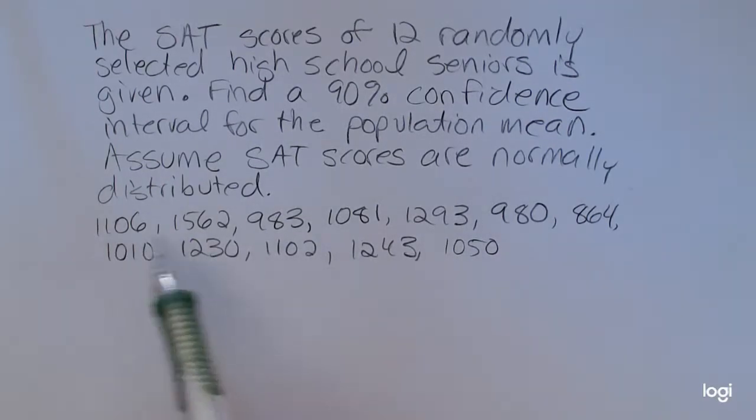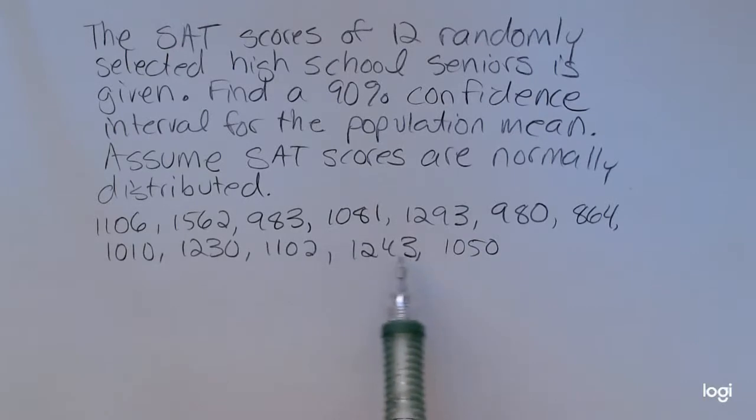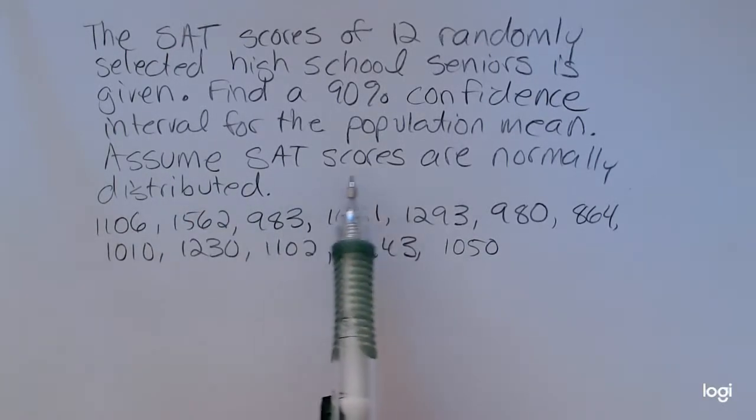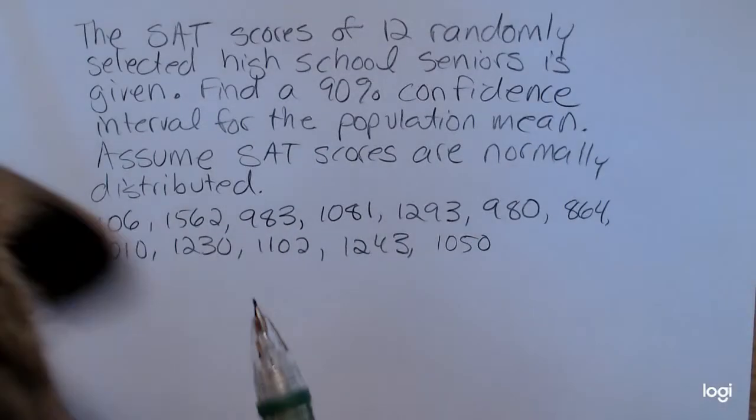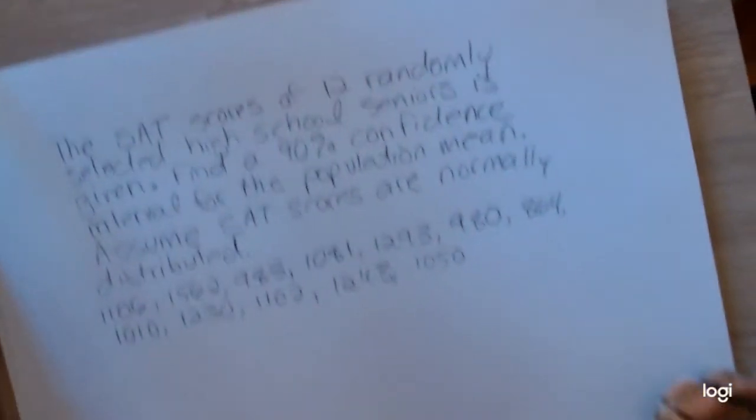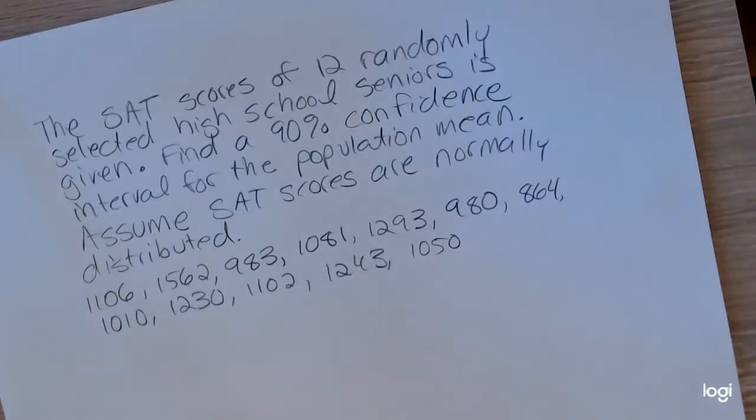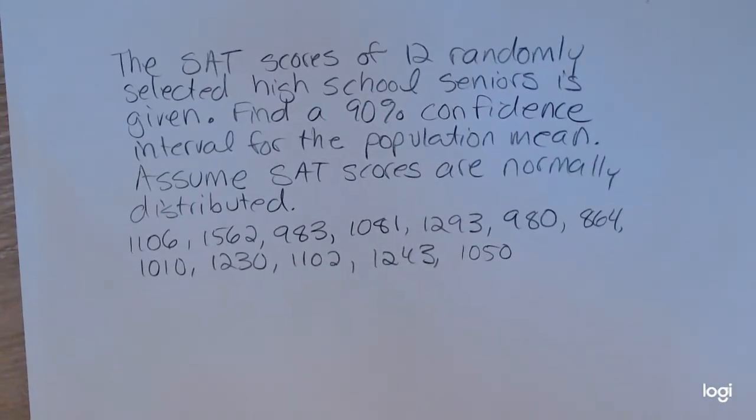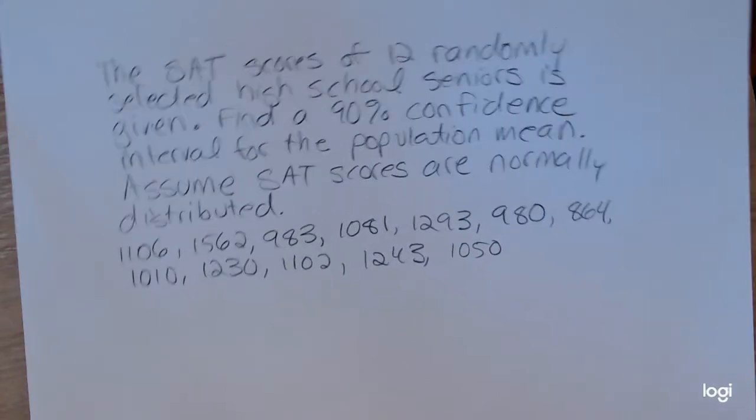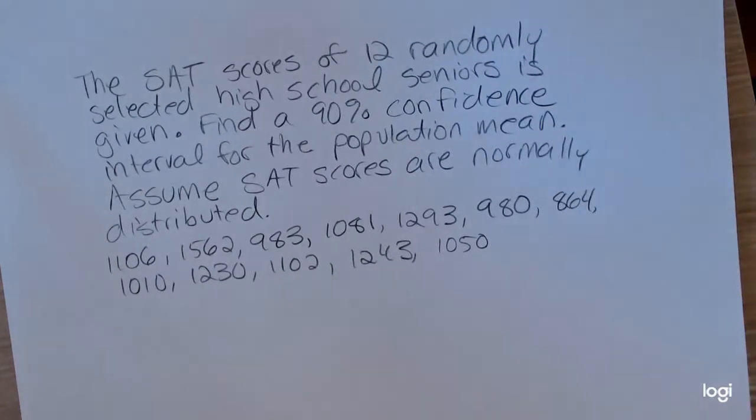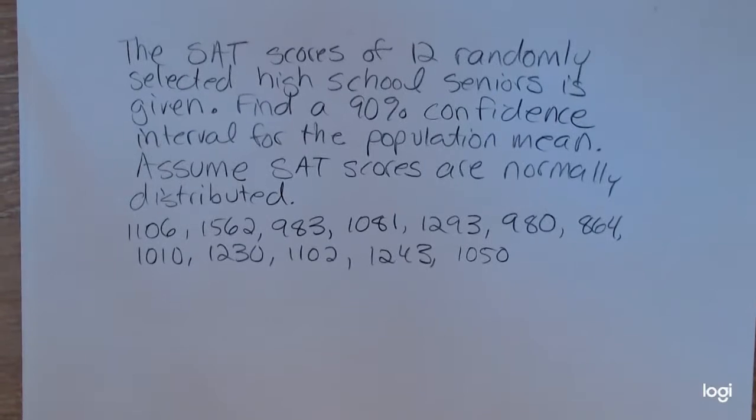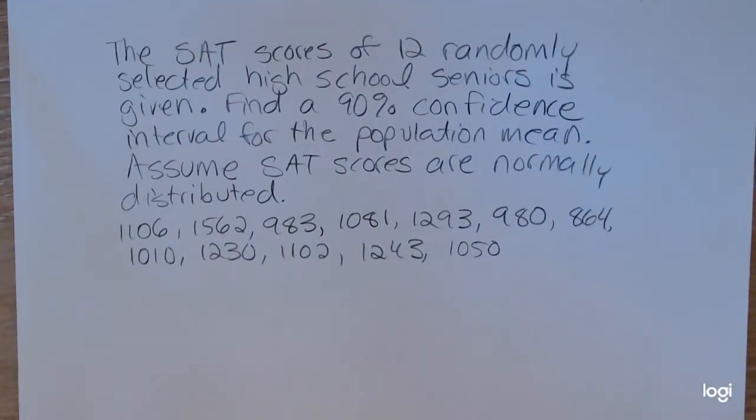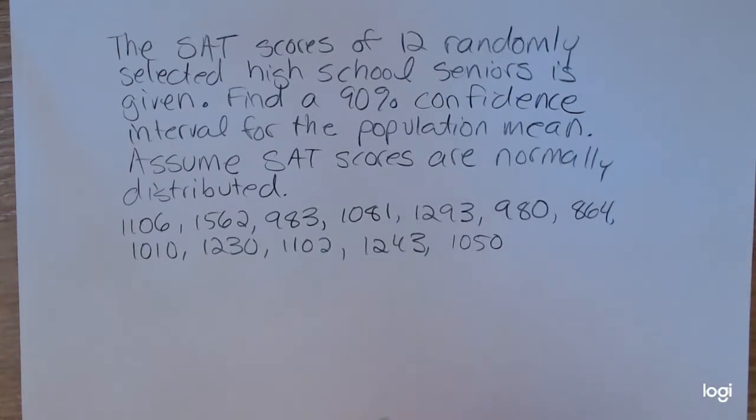And I have the 12 scores listed here. Now, because it says that we are to assume the scores are normally distributed, this does not mean I'm going to be using the Z distribution. It means that the assumption has been met to appropriately use the T distribution for that critical value.